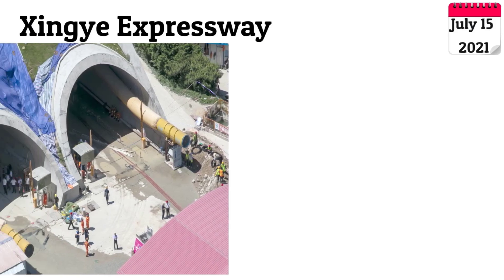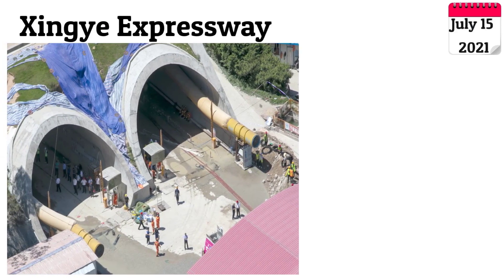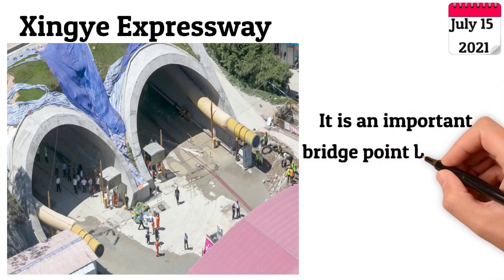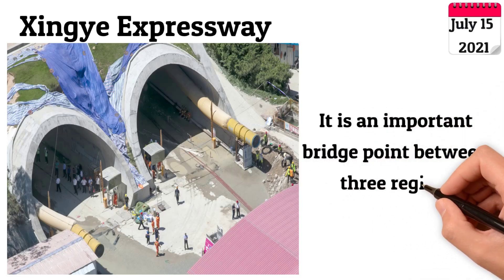At the time, it served as a vital link for swift transportation between the northern and southern regions of Zhuhai's primary urban area, connecting with the Hong Kong-Zhuhai-Macau Bridge, facilitating seamless travel across the three regions.